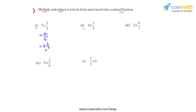Coming to the second bit, we have 4 times 1 over 3. The product of these two will be 4 over 3. To convert this into a mixed fraction we divide 4 by 3. We get the quotient as 1 and the remainder as 1. So the mixed fraction will be 1 and 1 third.